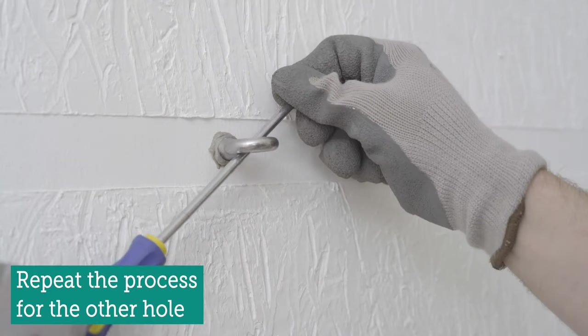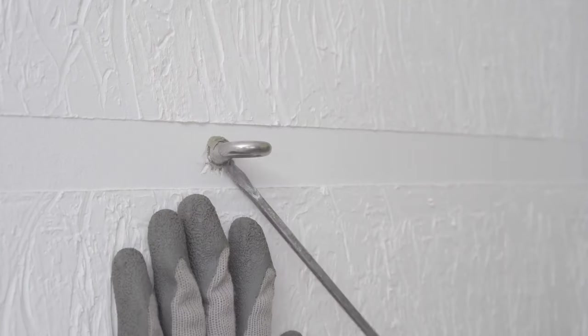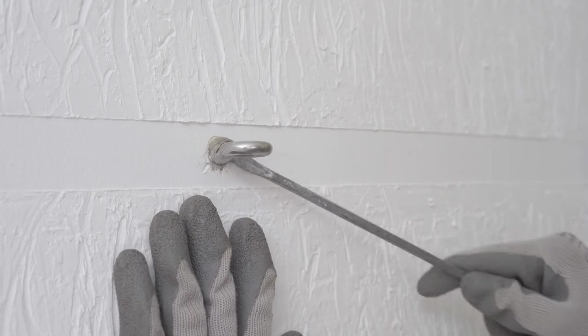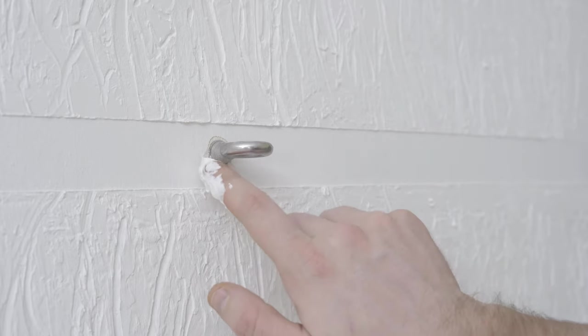Now we need to wait until the mortar in both holes is fully hardened, which typically takes approximately two hours. Finally, we can carefully remove the excess mortar. Optionally, you could also use repair putty for a more polished look.